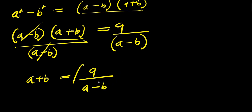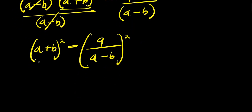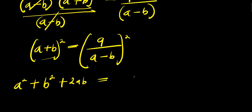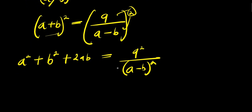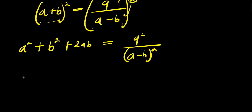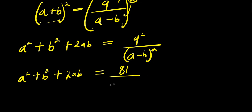Now we can make a plus b the subject here. We divide both sides by a minus b, so we have a plus b equals 9 divided by a minus b. What we can do next is take the squares of both sides and apply this equation. Expanding, this is just like having a squared plus b squared plus 2ab equals 9 squared, divided by a minus b squared.